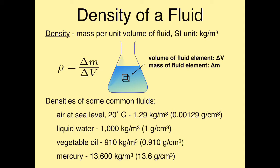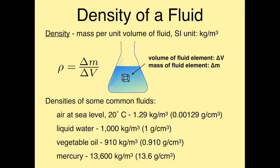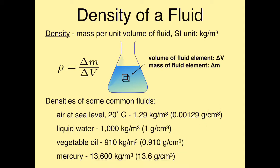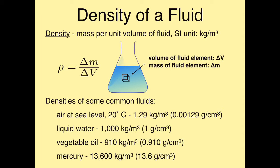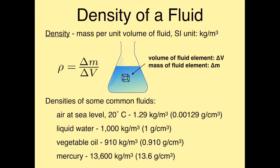Here's a list of some common densities. Air at sea level has a density of 1.29 kilograms per cubic meter — that's the SI unit. Another common unit is grams per cubic centimeter, in which case air is 0.00129 g/cm³. There's a factor of a thousand difference between these two units. Liquid water has a density of exactly 1,000 kg/m³, which equals 1 g/cm³. Vegetable oil has a slightly lower density of about 910 kg/m³, or 0.910 g/cm³.